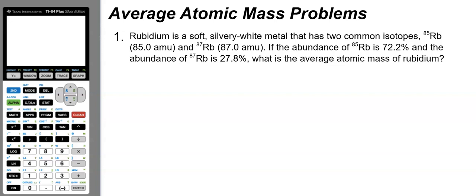In this video we are looking at average atomic mass practice problems. Problem one says rubidium is a soft silvery-white metal that has two common isotopes: rubidium-85, which has a mass of 85.0 amu, and rubidium-87, which has a mass of exactly 87.0 amu. The abundance of rubidium-85 is 72.2% and the abundance of rubidium-87 is 27.8%. What is the average atomic mass of rubidium?